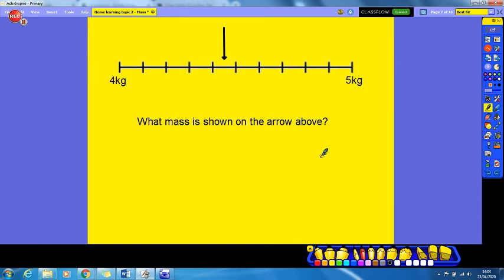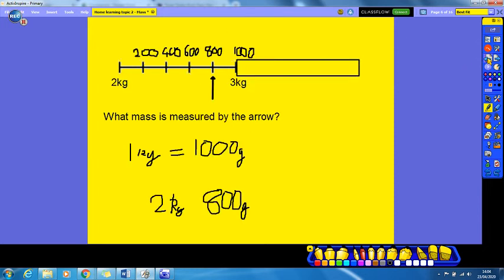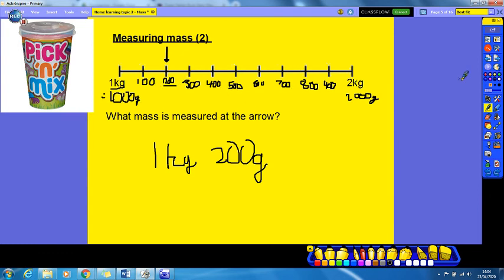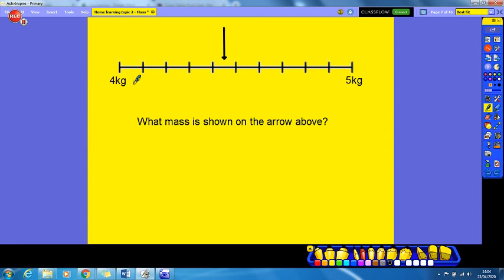Hopefully you've had a go at this question. Now the difference between the end point, the start point and the end point, is again 1 kilogram. And this number line looks suspiciously similar to the first one we did, it looks suspiciously similar where the intervals went up in 100 grams. So I'm going to try that again, I'm going to use the method that I used before to see if that works. So this would be 100 grams, 4 kilogram and 100 grams, 4 kilogram and 200 grams, 4 kilograms and 300, 4 kilograms and 400, 4 kilograms and 500, 4 kilograms and 600, 4 kilograms and 700, 4 kilograms and 800, 4 kilograms and 900. And if you add 100 grams to 4 kilograms and 900, you would reach 5 kilograms, so we know that our intervals are correct.